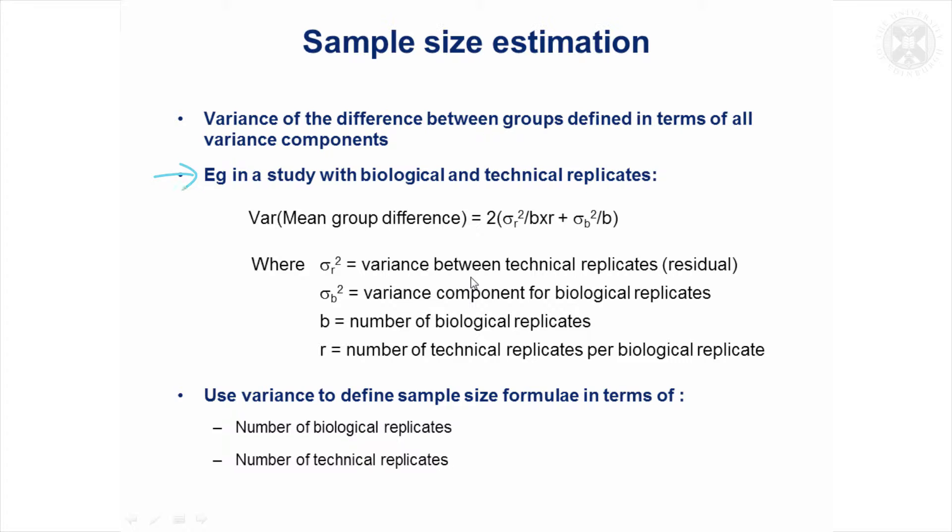For example, if we had a study with biological and technical replicates, the overall variance of our mean group differences can be defined in terms of the residual or between replicate variance and the variance component for the biological replicates. We could potentially rearrange that to get formulae that would define sample size.